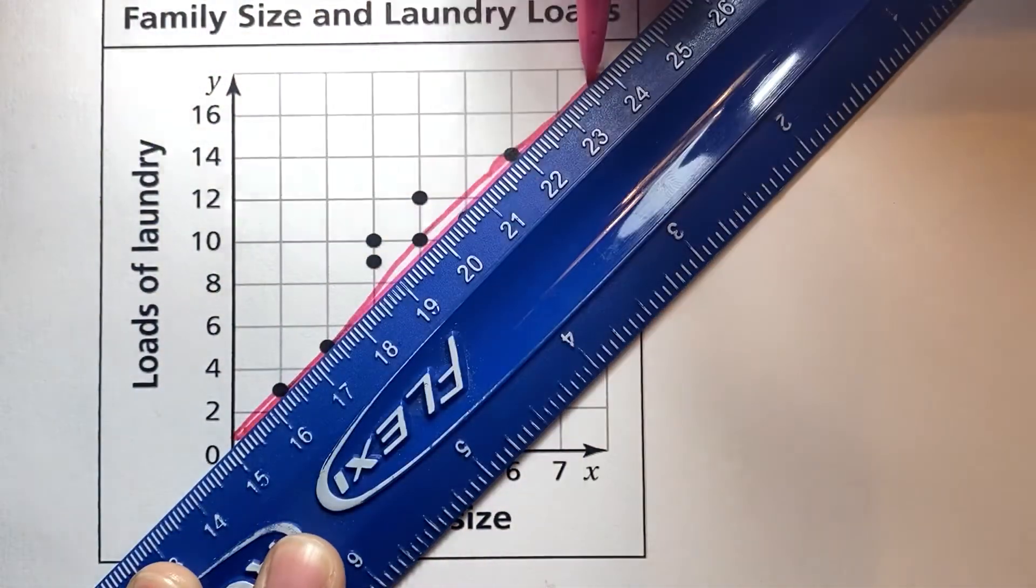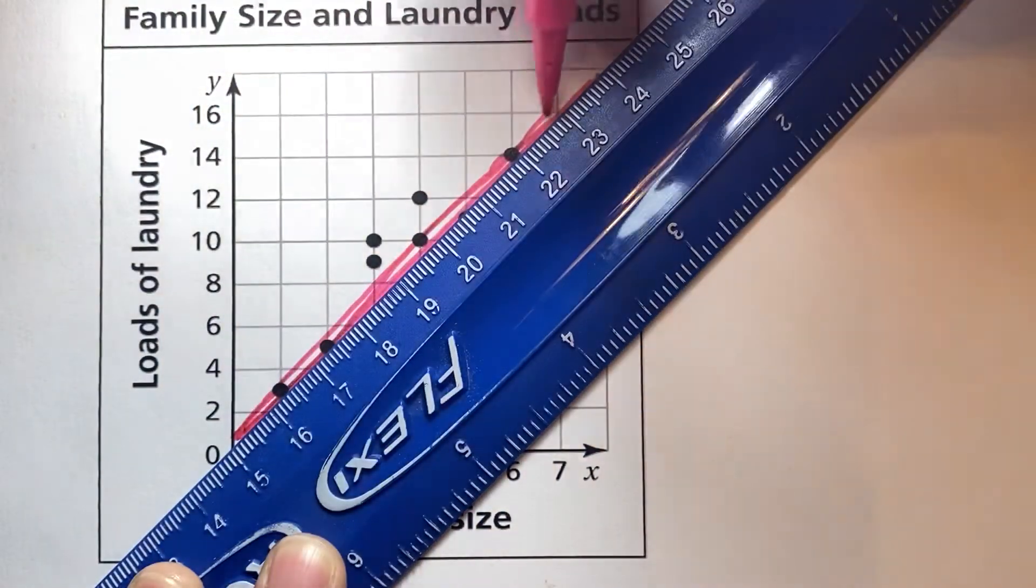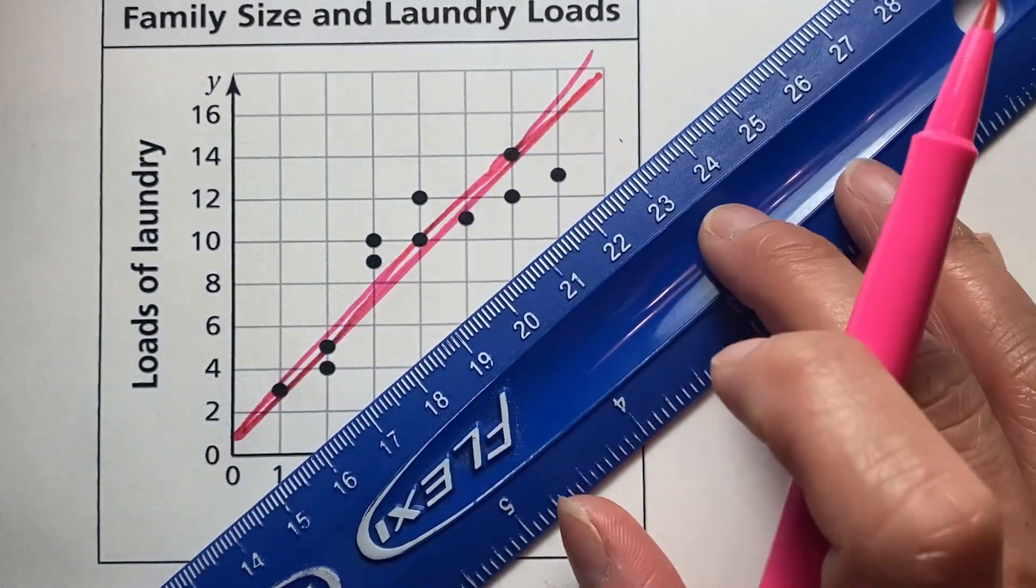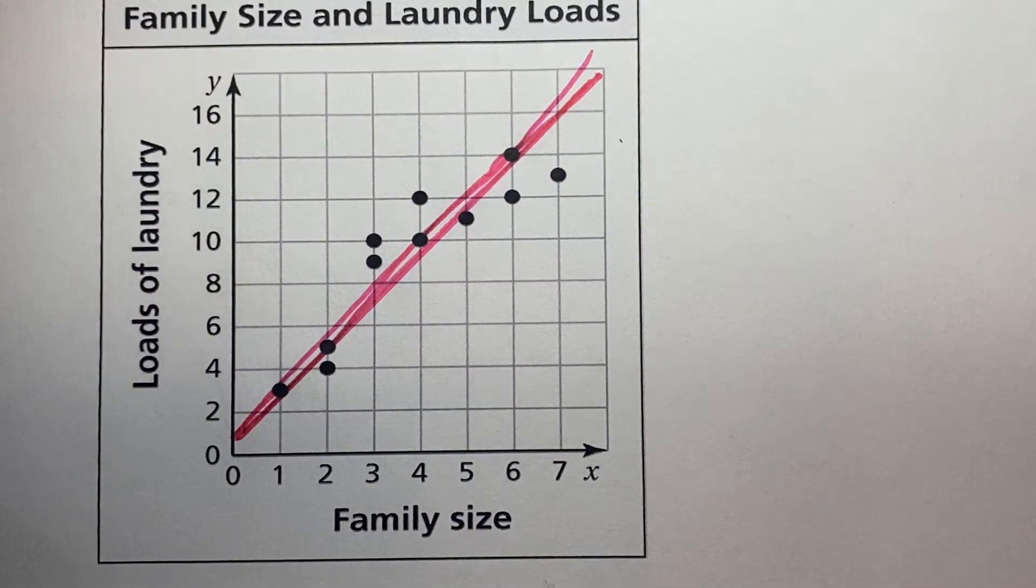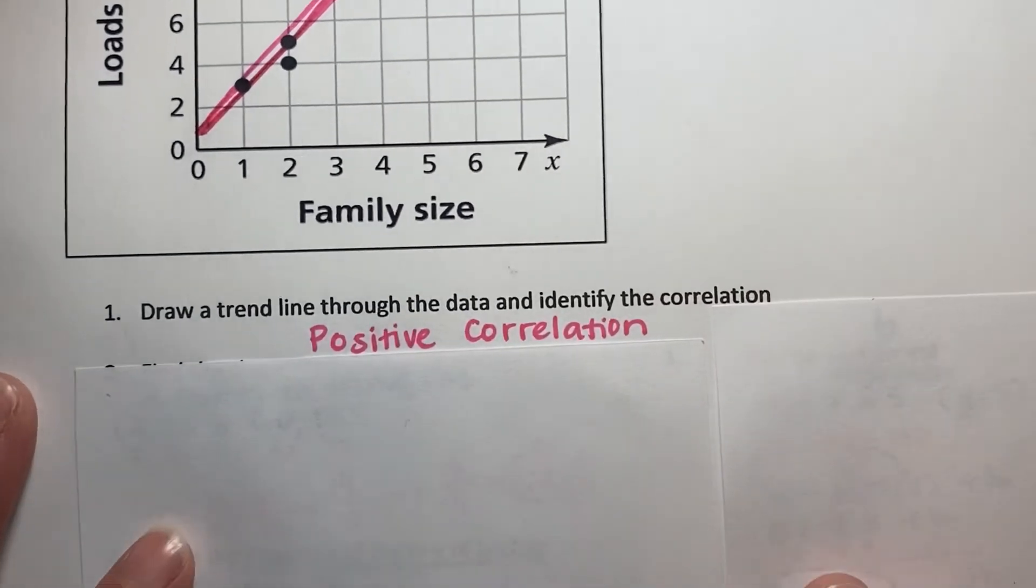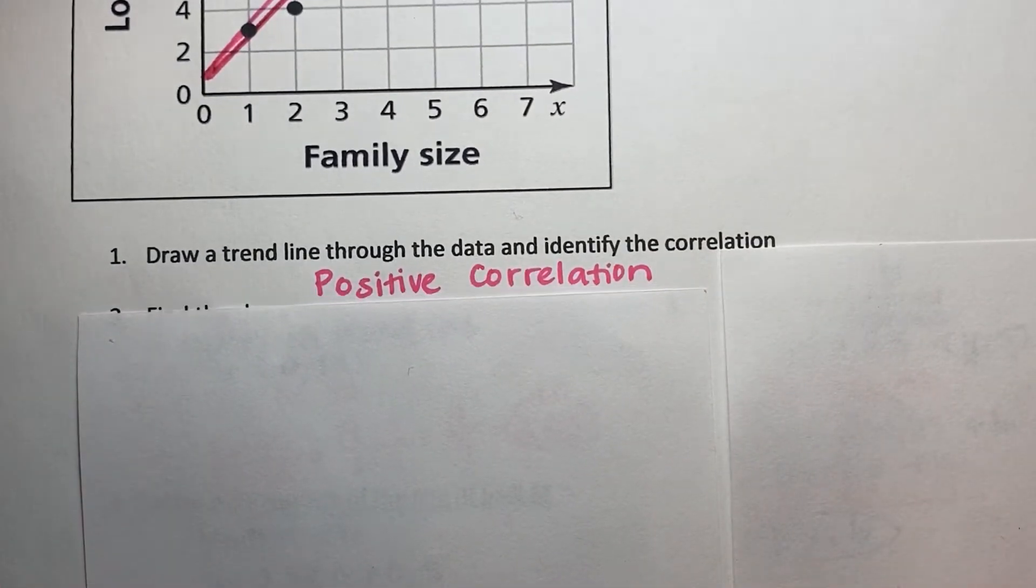And it's not going to be perfect. We are going to come up with our information based on that trend line there. So from this trend line, we can identify that the data is positive correlation. So that's going to be the first answer here. The trend line shows a positive correlation.